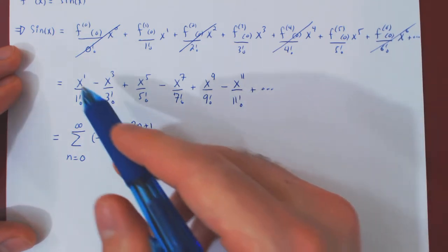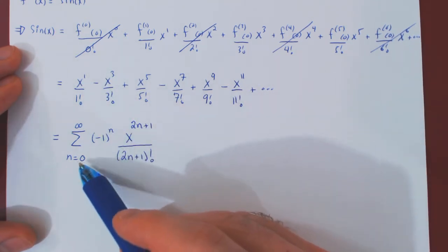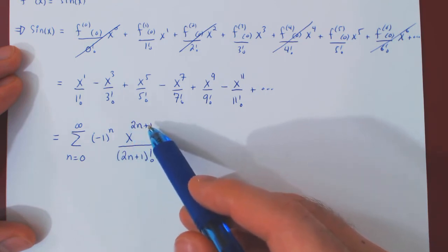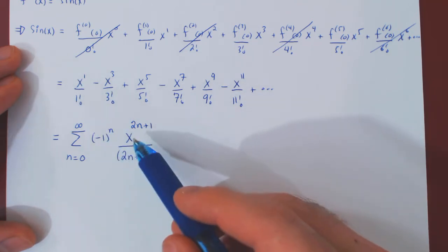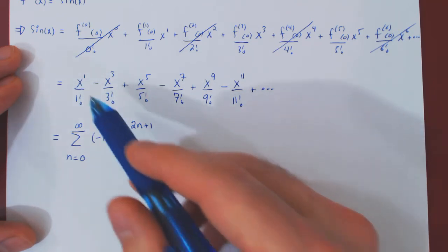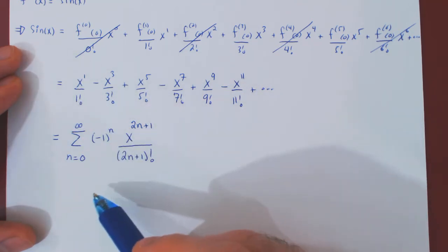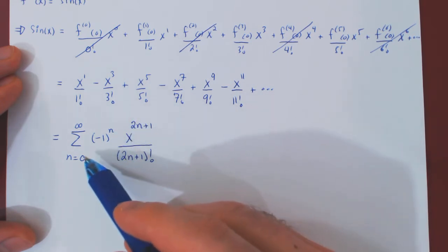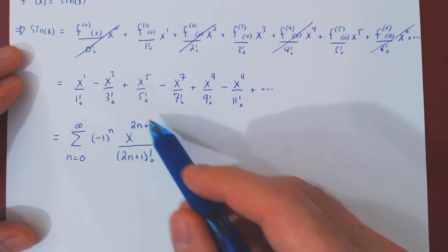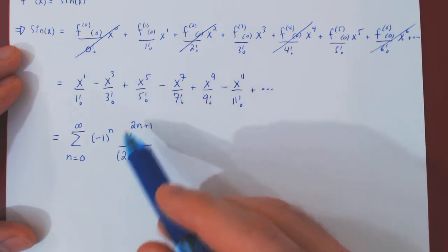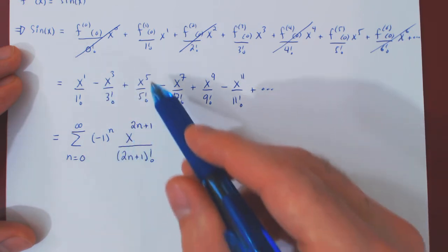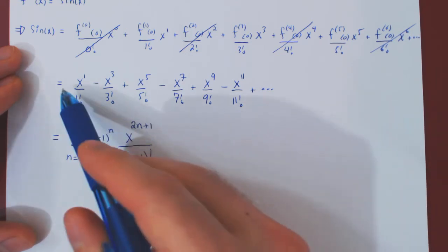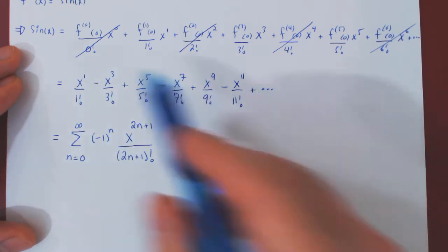So the term is x to the 2n plus 1, over 2n plus 1 factorial. We can verify: when n is 0, we get x to the 1 over 1 factorial; when n is 1, we get x to the 3 over 3 factorial; when n is 2, x to the 5 over 5 factorial. So we now have a closed form expression for the Maclaurin series of sine of x.